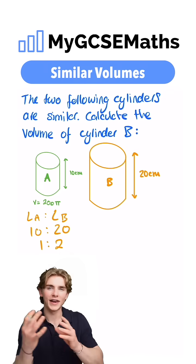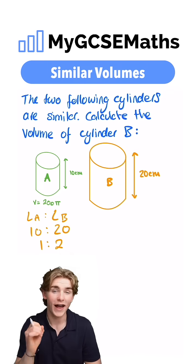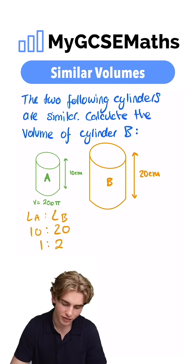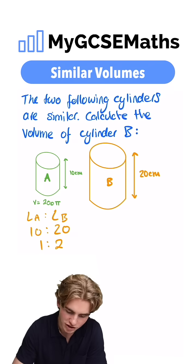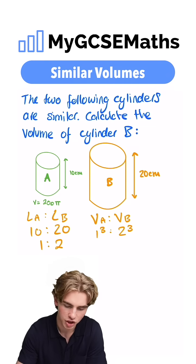Now, how do we go from the ratio in the lengths to the ratio in the volumes? We're actually going to have to cube this ratio. We're going to have to cube the ratio 1 to 2. So we can calculate the ratio of the volumes, the volume of A to the volume of B, and it's going to be 1 cubed to 2 cubed, cubing that ratio in the lengths.